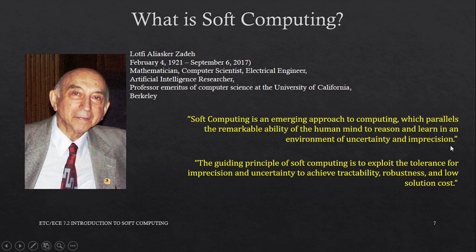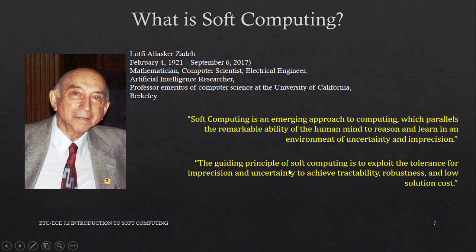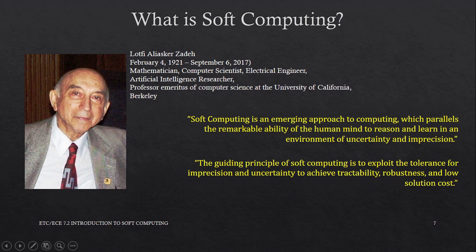The human brain is the inspiration. We want to make machines do what the human brain can do. But how? In 1994, he said that the guiding principle of soft computing is to exploit the tolerance for imprecision and uncertainty to achieve tractability, robustness, and low solution cost.